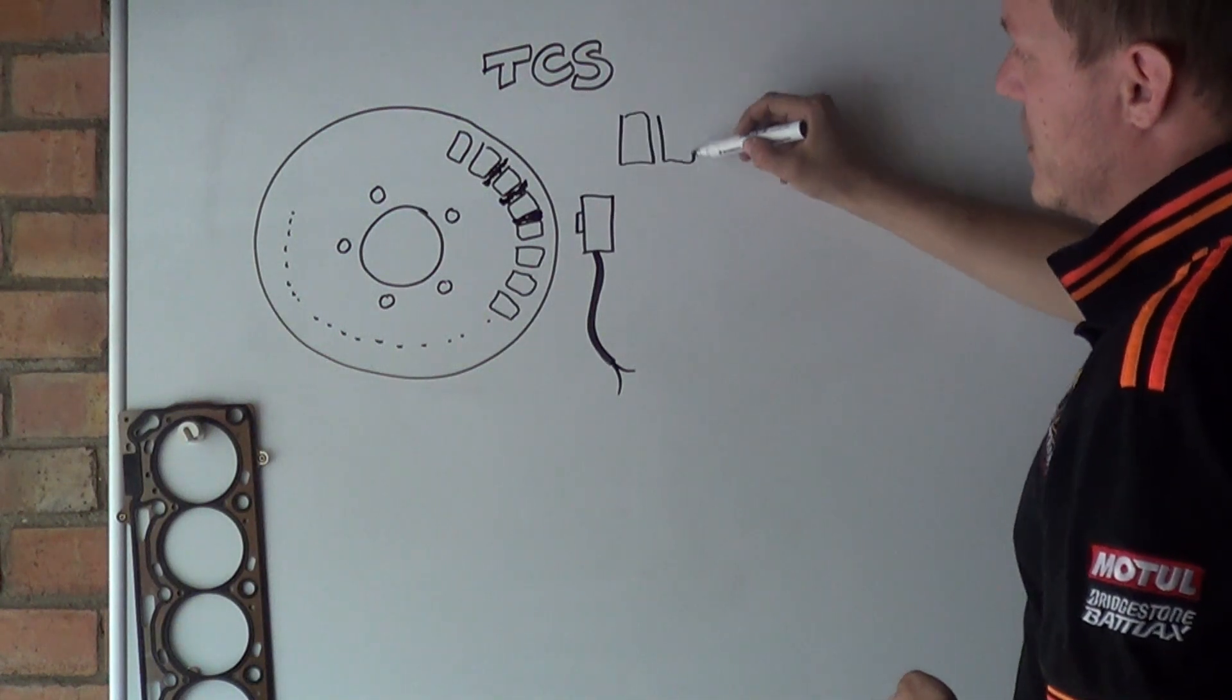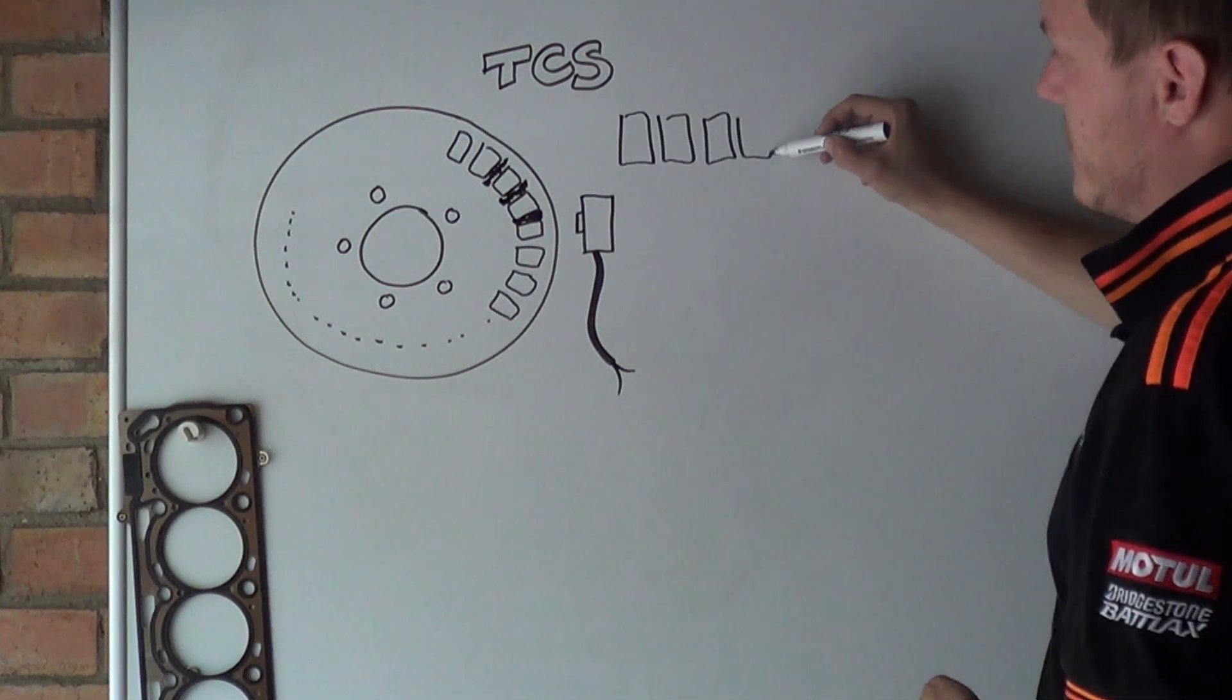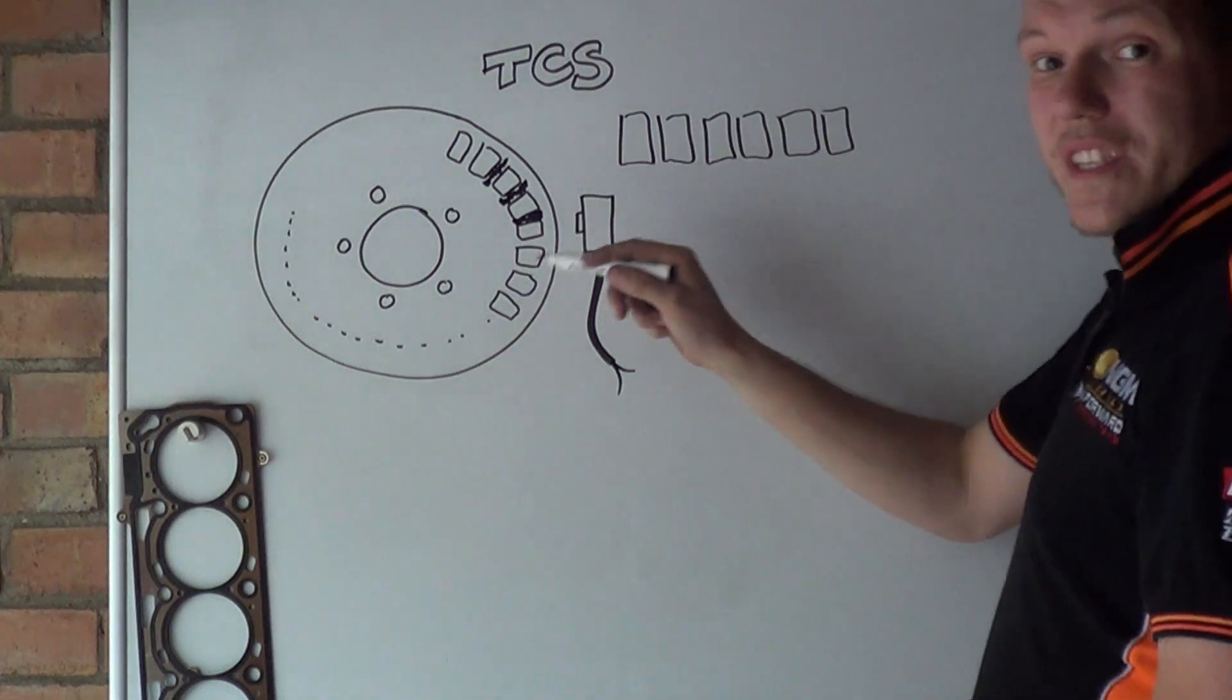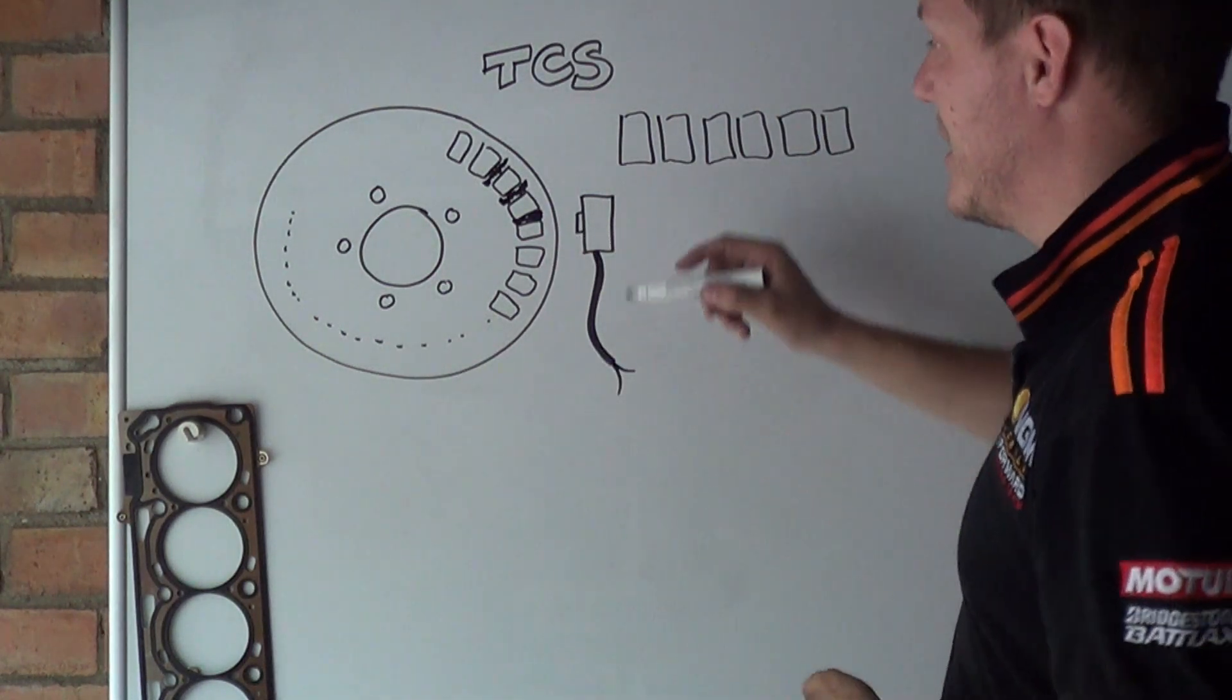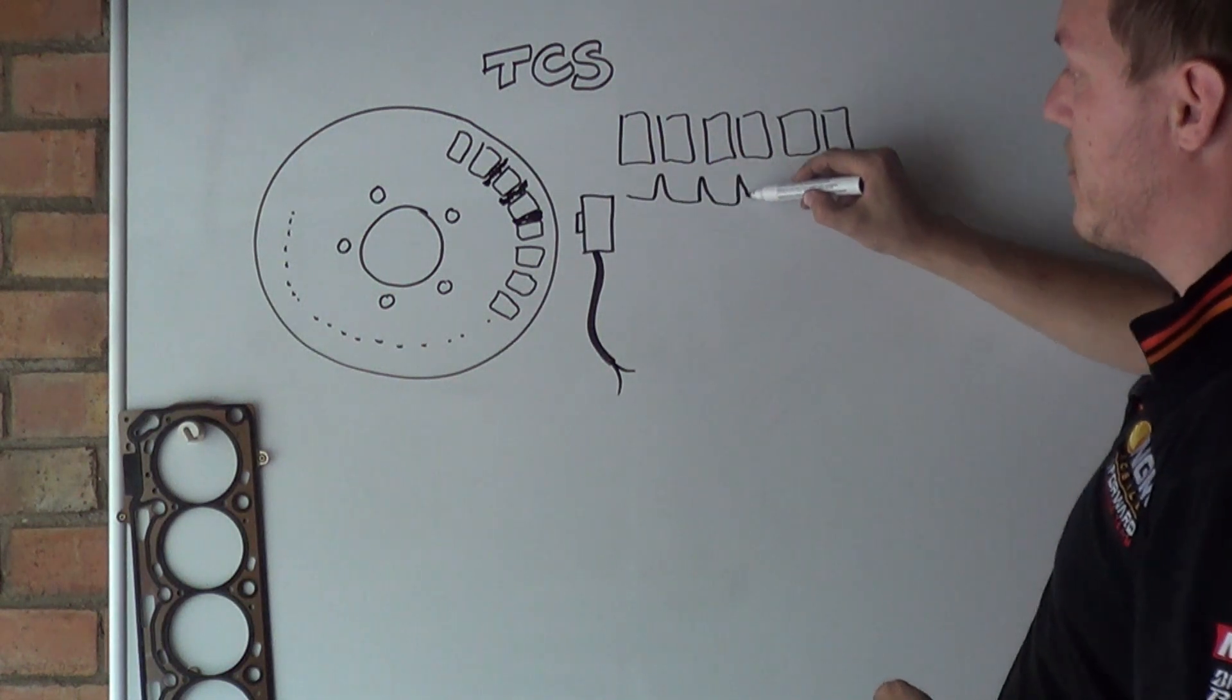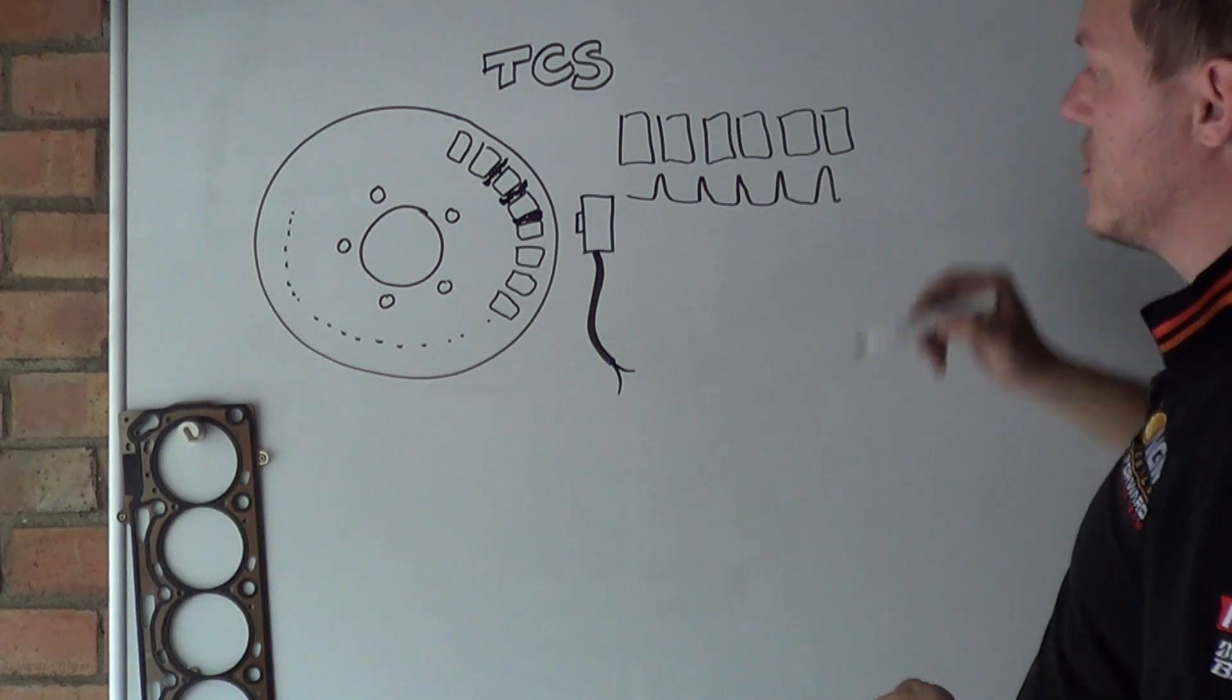So imagine these are all your windows like so. What the sensor is going to send as a signal is something like this: it's going to bump there, bump there, pulse, pulse, pulse.